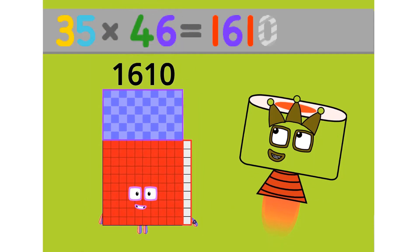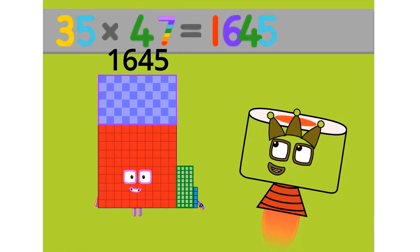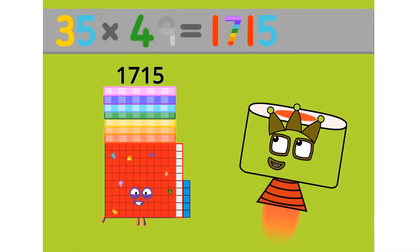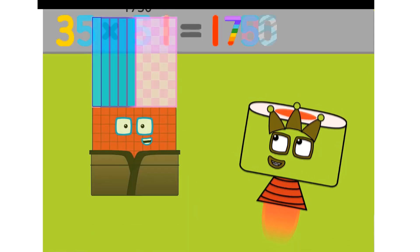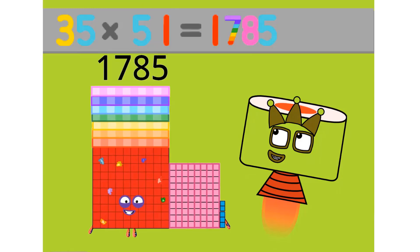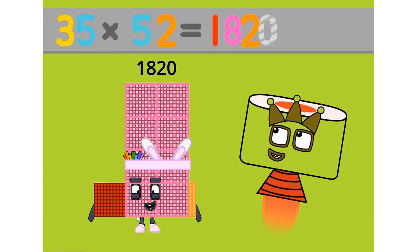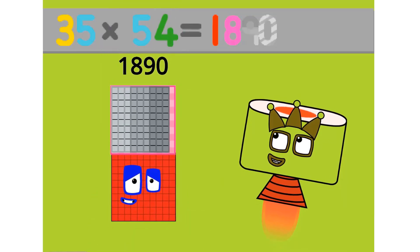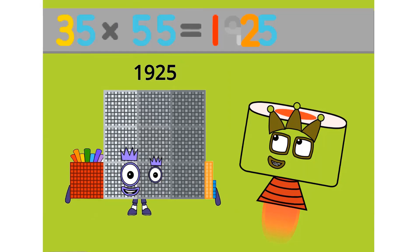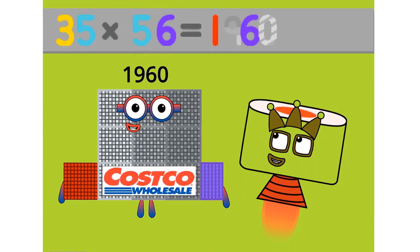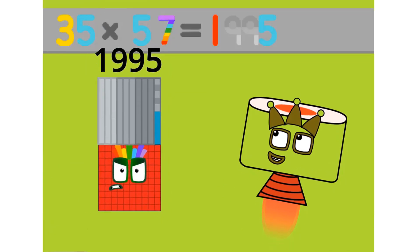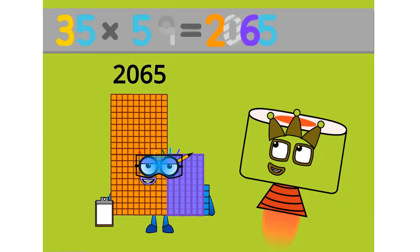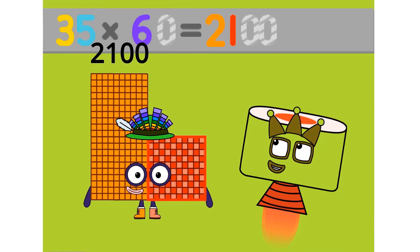35 times 46 equals 1610. 35 times 47 equals 1645. 35 times 48 equals 1680. 35 times 49 equals 1715. 35 times 51 equals 1785. 35 times 52 equals 1820. 35 times 53 equals 1855. 35 times 54 equals 1890. 35 times 55 equals 1925. 35 times 56 equals 1960. 35 times 57 equals 1995. 35 times 58 equals 2030. 35 times 59 equals 2065. 35 times 60 equals 2100.